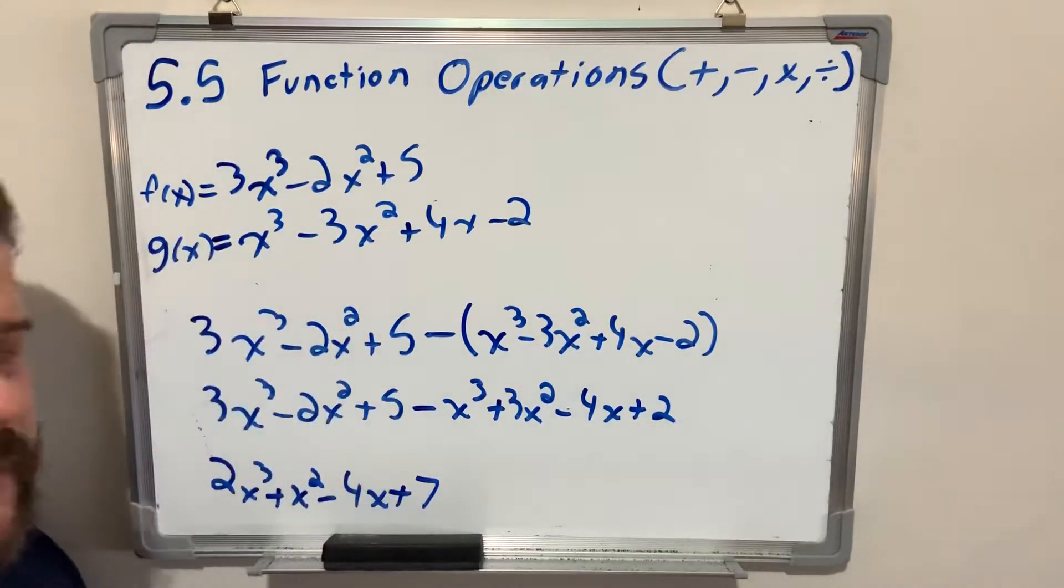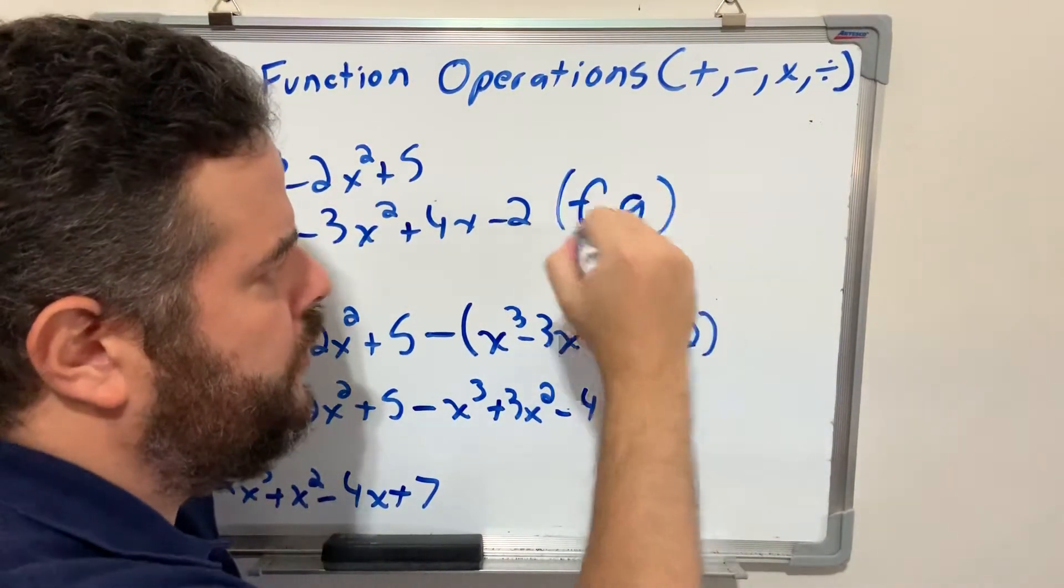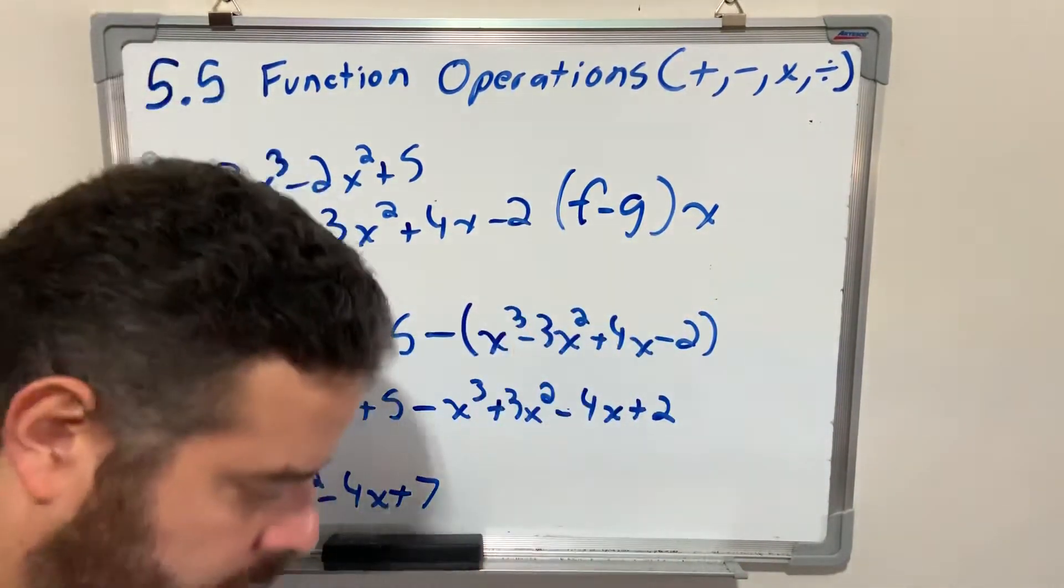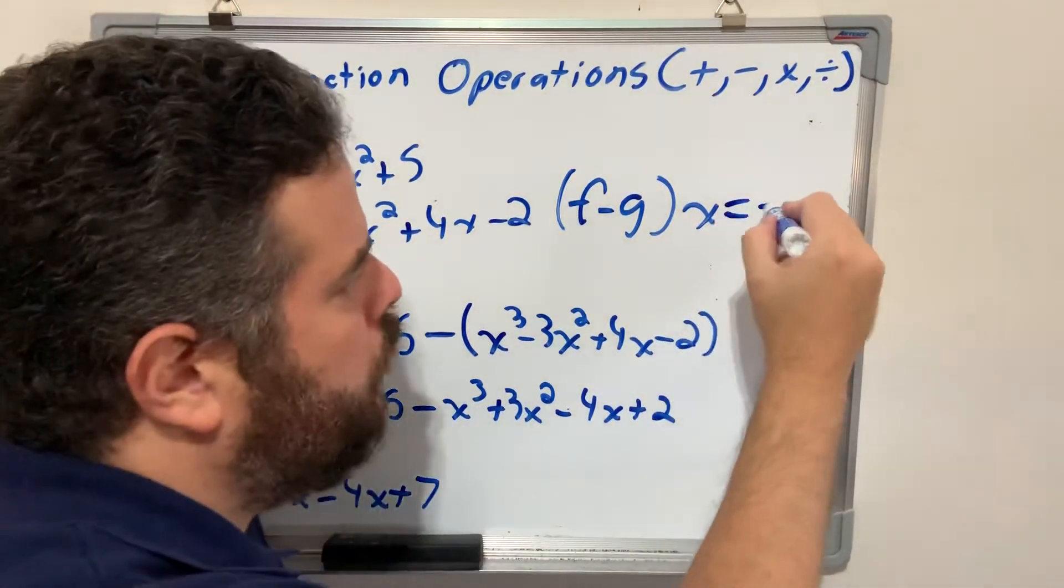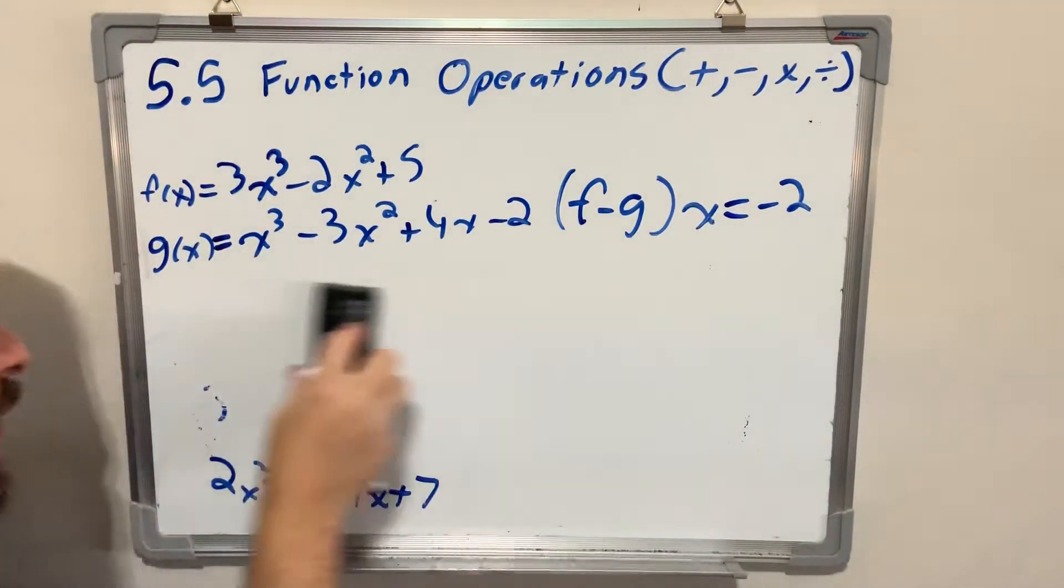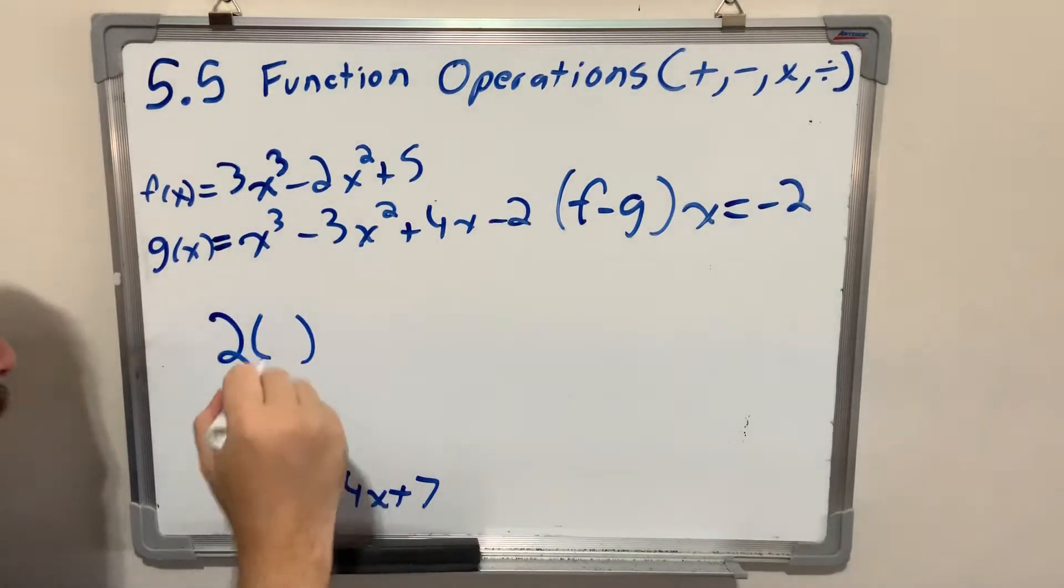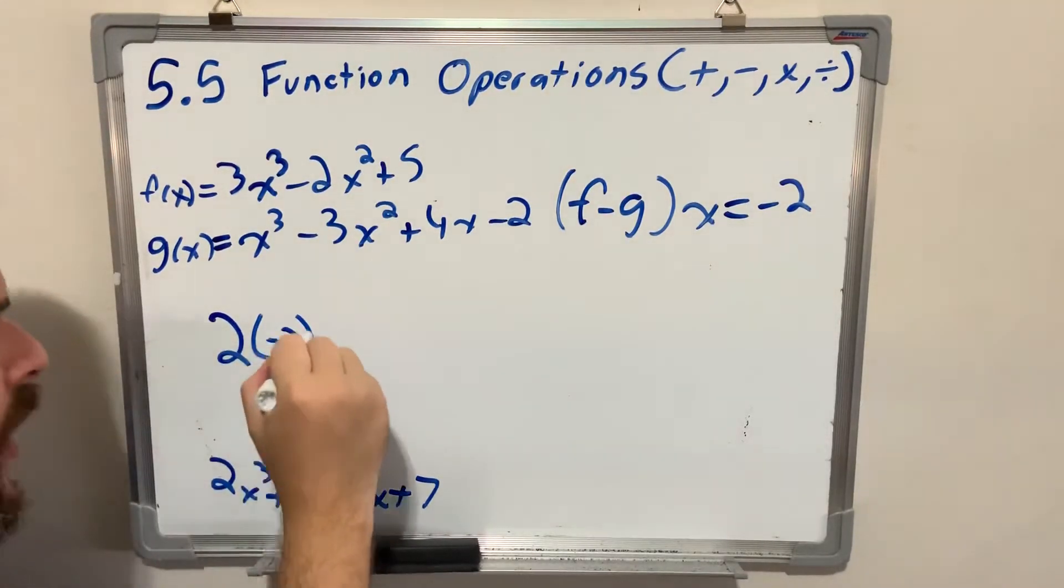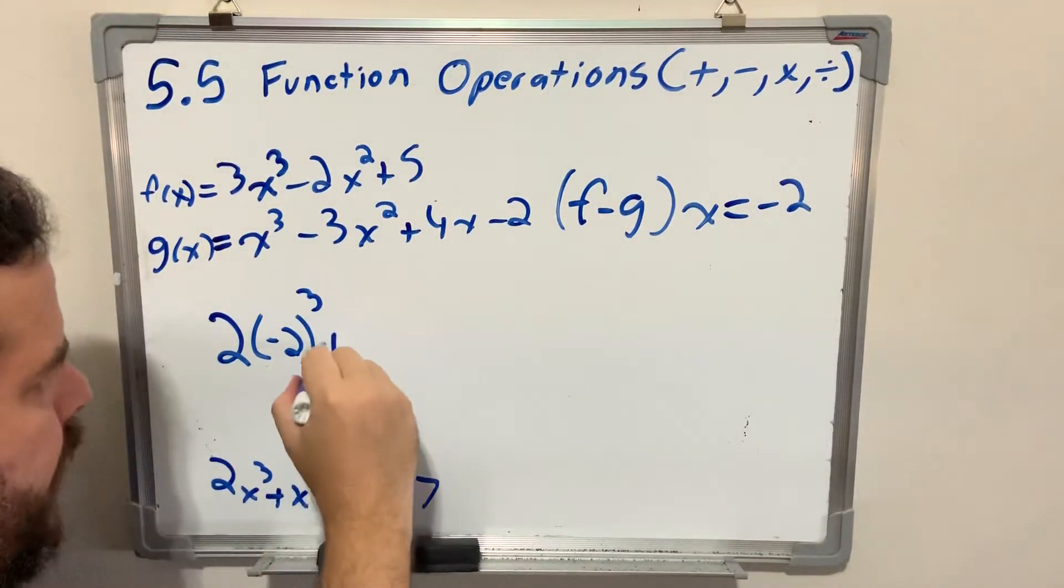And then I'm asked to evaluate this expression, subtracting f of x from g of x, when x equals negative 2. Let's do that at the top. This is very important to practice. Remember, parentheses really helps you visualize the signs better. Make sure you write your parentheses.